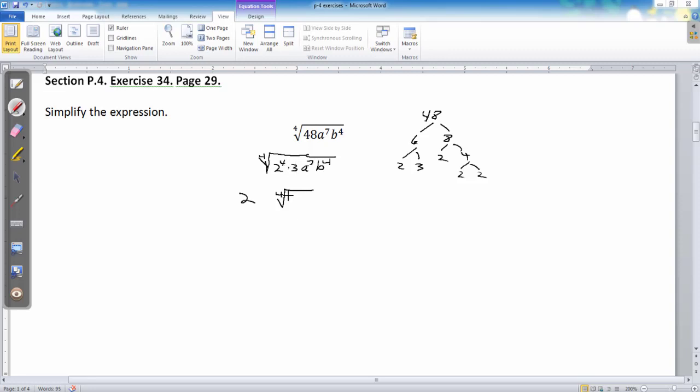The 3, I can't bring any out. I've got to leave the 3 there. 4 divides into 7 once, so I get to bring out an a with a remainder of 3. So, that means I have to leave 3 a's inside. 4 divides into 4 once, I get to bring out a b. It divides in evenly, so there's no b's left.